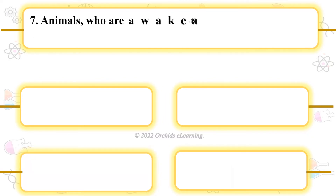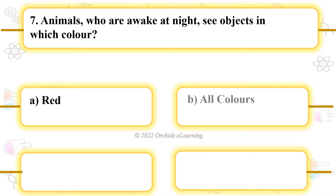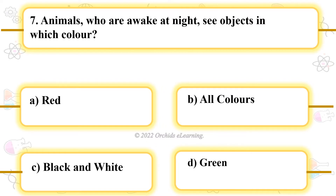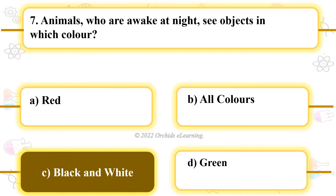Animals who are awake at night — in which color do they see objects? C. Black and white.